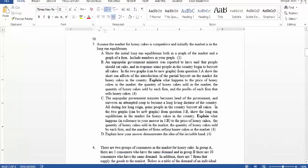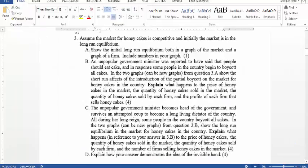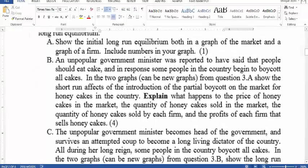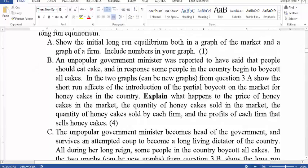Let's look at question 2. It says that an unpopular government minister was reported to have said that people should eat cakes, and in response some people in the country began to boycott the cakes. In the two graphs from question 3, show the short run effects of introduction of partial boycott. Explain what happens to the price of honey cakes in the market, the quantity sold in the market, the quantity of honey sold by each firm, and the profit that each firm will make.